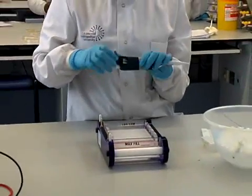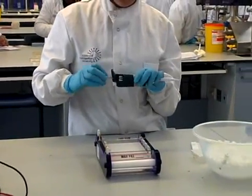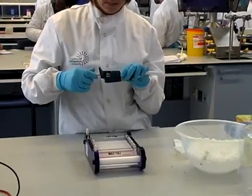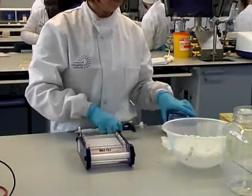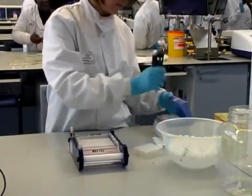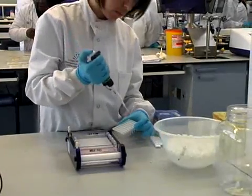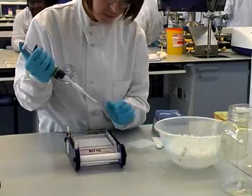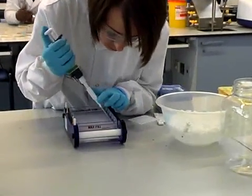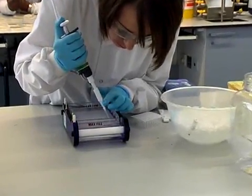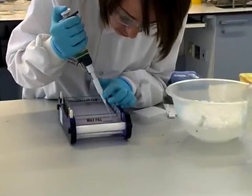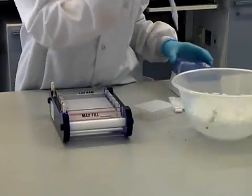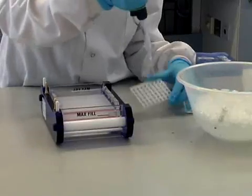The gel is now ready to have the samples added so the pipette is set to the correct volume for each sample. A fresh tip is used for each sample. The first sample is taken and carefully dispensed into the well. Care should be taken not to put the tip through the bottom of the gel when adding your sample.